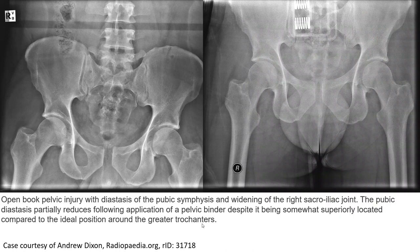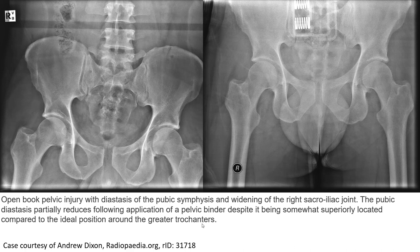The joint opening of the pelvic injury shows diastasis of the pubic symphysis and widening of the sacroiliac joint. The pubic diastasis is partially reduced following application of a pelvic binder, despite it being somewhat superiorly located compared to the ideal position around the greater trochanters. Thank you.